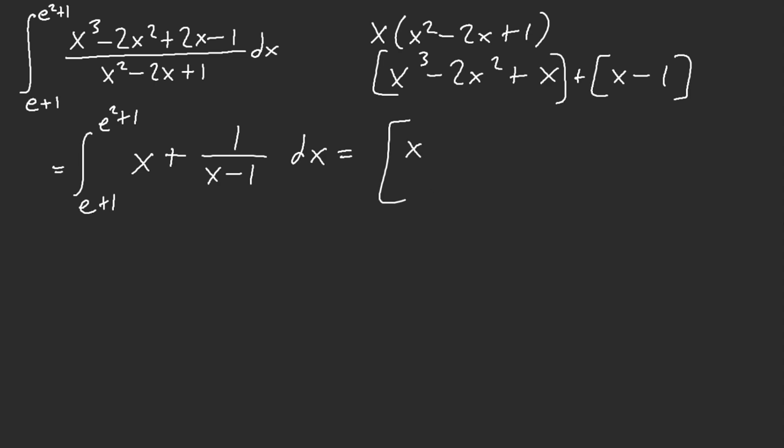So now I have x squared over 2 plus ln, x minus 1, e squared plus 1, e plus 1 here. This is a little disgusting, I don't know why they would throw this in.